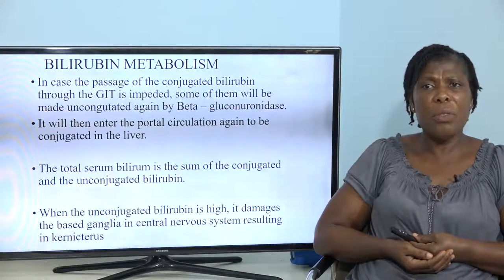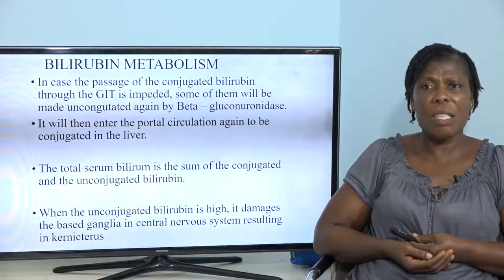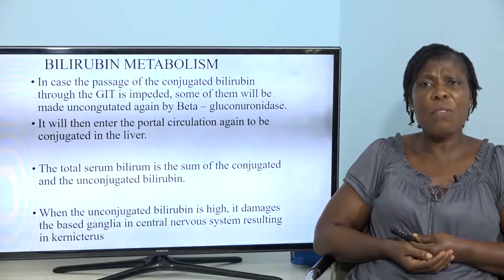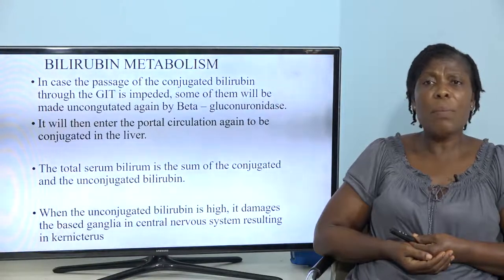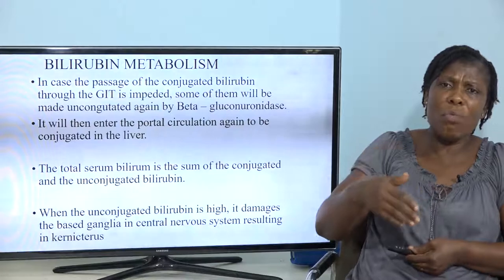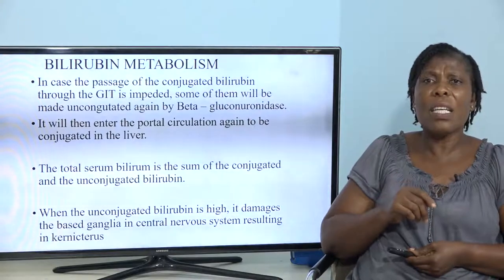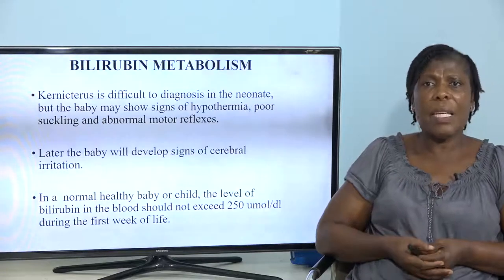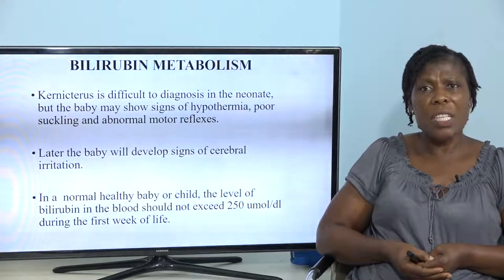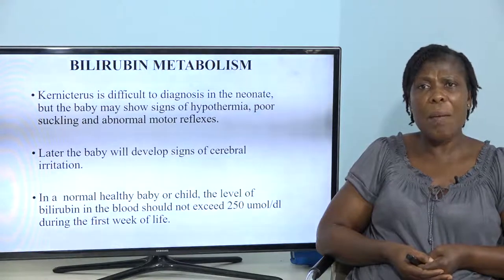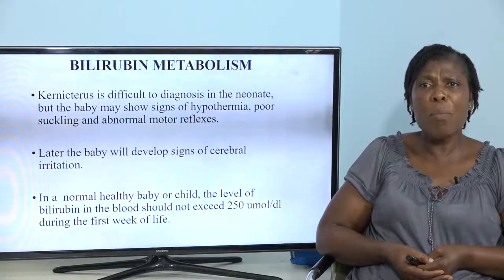When the unconjugated bilirubin is high, it damages the basal ganglia in the central nervous system, resulting in kernicterus. The bilirubin has affinity for fatty and nervous tissue, so when high in the system it is able to pass through the blood-brain barrier and goes into the ganglia in the central nervous system, resulting in kernicterus. Kernicterus is a difficult condition to diagnose in the newborn, but the baby may show signs of hypothermia, poor suckling, and abnormal motor reflexes because it has affected the brain tissue.